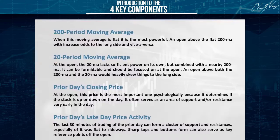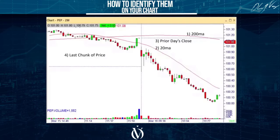Let me go to charts and show you how to put this together. We're looking at a two-minute chart of Pepsi. Item number one is the 200-period moving average right there. Item number two is the 20-period moving average right there.